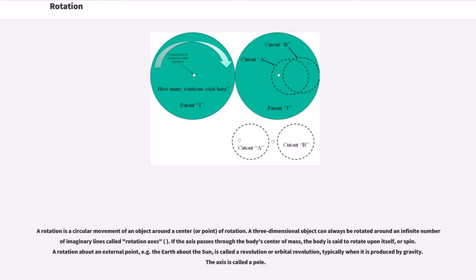If the axis passes through the body's center of mass, the body is said to rotate upon itself, or spin. A rotation about an external point, for example the Earth about the Sun, is called a revolution or orbital revolution, typically when it is produced by gravity. The axis is called a pole.